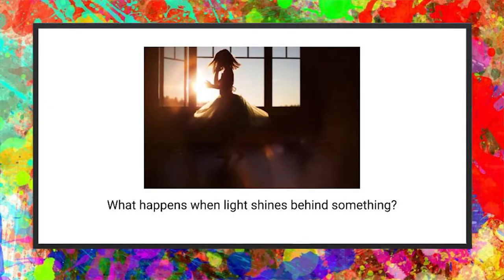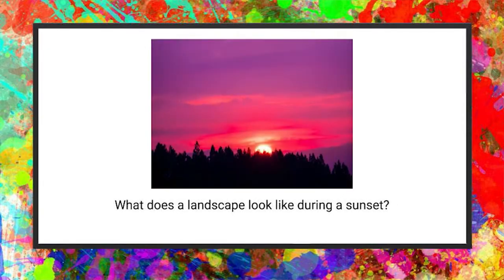A silhouette is what happens when the light shines from behind something. Notice that the girl in this picture — her whole body, dress, and hair — looks black. You can see little bits of light shining through the edges of the fabric and her hair, but for the most part it's just a black empty shadow. That's the same thing we see when the sun sets behind a landscape. Here's a picture of a landscape with a bright pink and purple sky — that means it's a sunset. The sun is really low, peeking just barely above the tops of the trees, and the trees are black. It's a shadow. It's a silhouette.